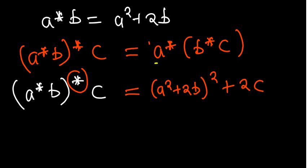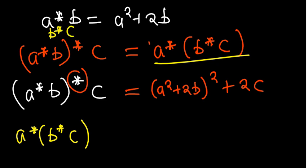Now we can now handle the other part, the right-hand side, which is now a star b star c. Okay, so we need to find b star c since it's not given. So if we actually substitute b star c directly there, we're going to have b squared plus 2c. So that is what is denoting what b star c.